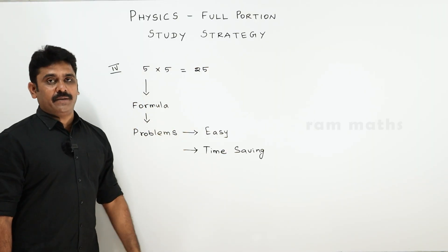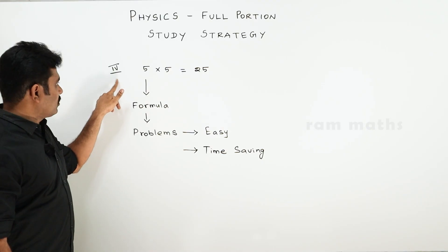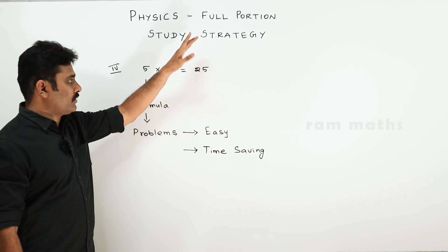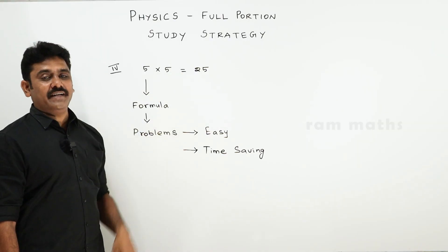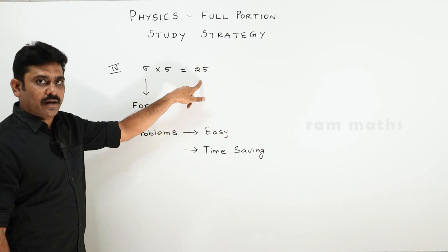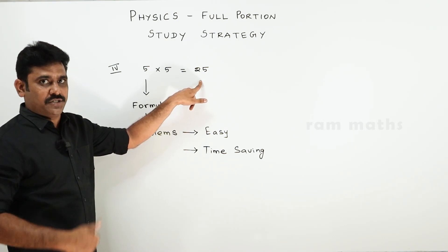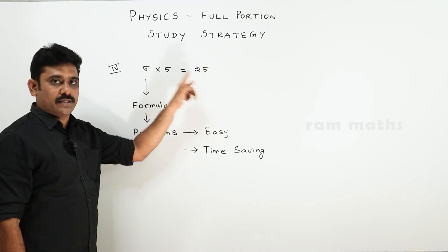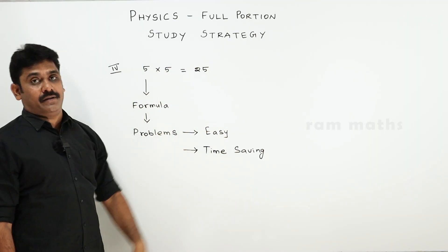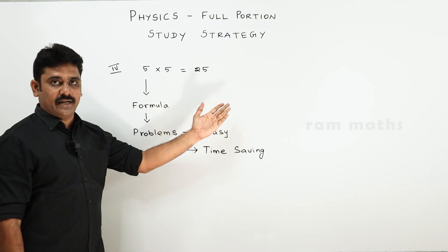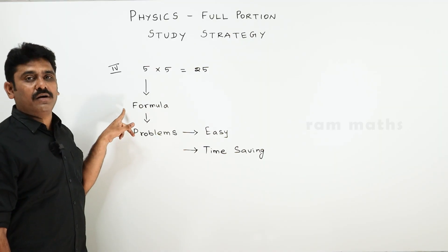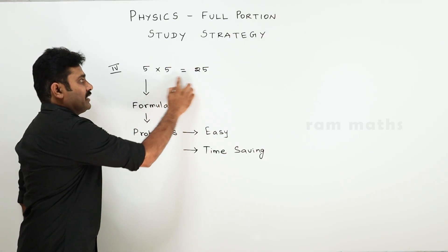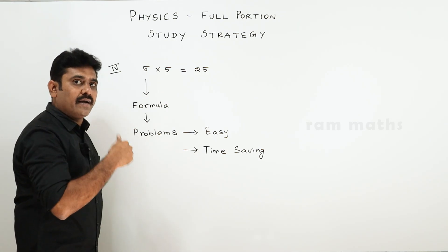How do we complete Part 4 easily? First, Part 4 has the maximum weightage compared to Parts 1, 2, and 3. If you have 5-mark derivation questions complete, you check the final equation. If you have 5-mark problems complete, you will automatically be able to solve them the first time.